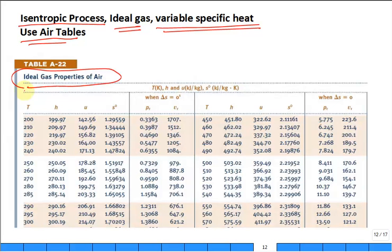So, just a reminder, here is your ideal gas properties for air. So, as a function of temperature, you have enthalpy, internal energy, and S naught. That's that low-pressure entropy value.